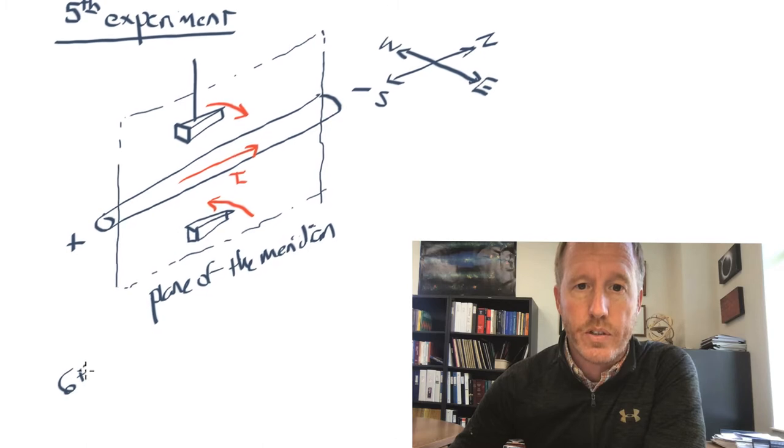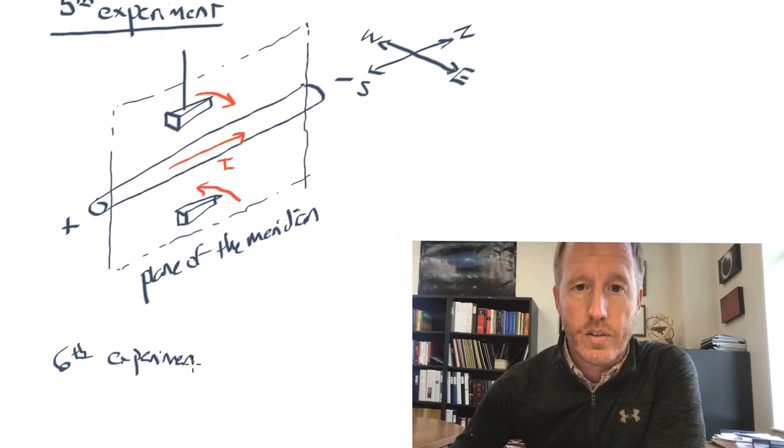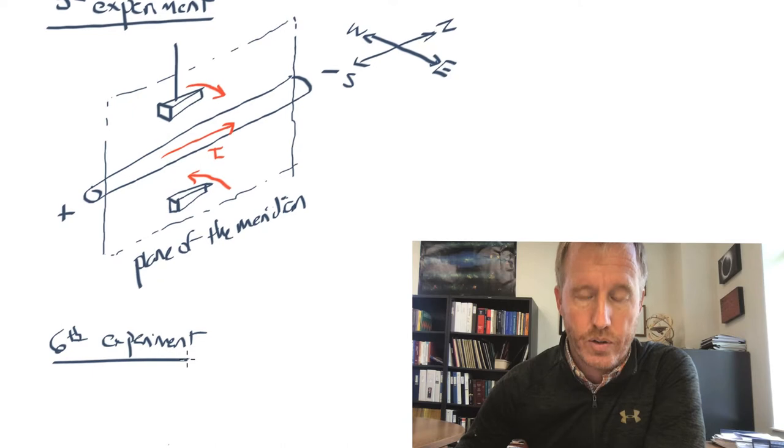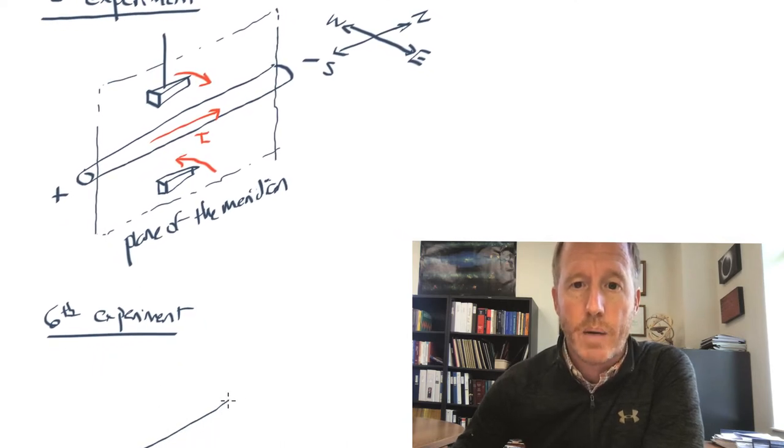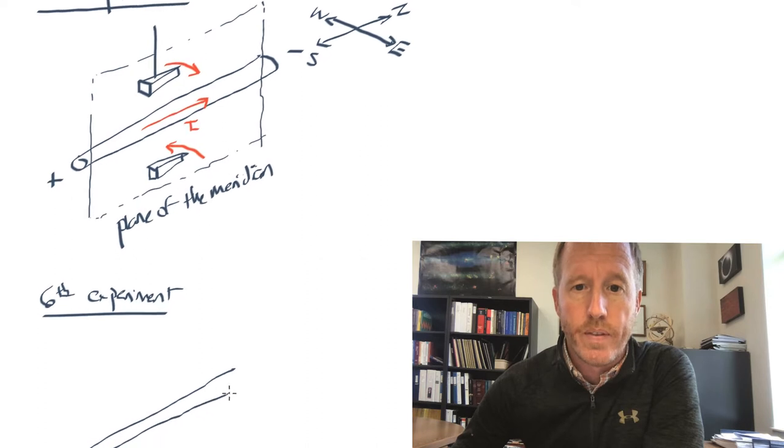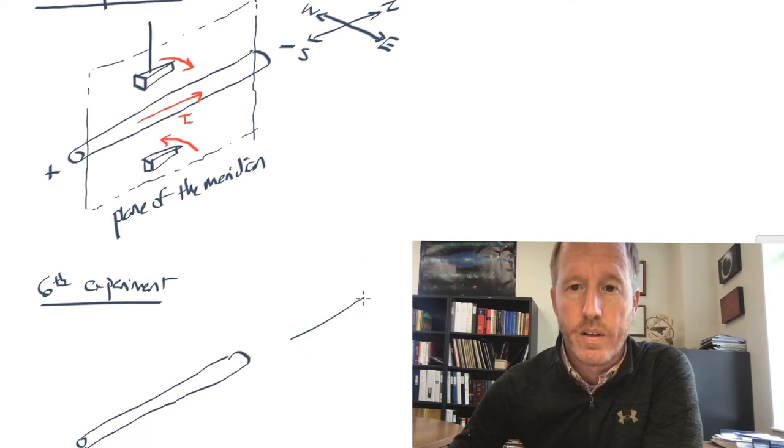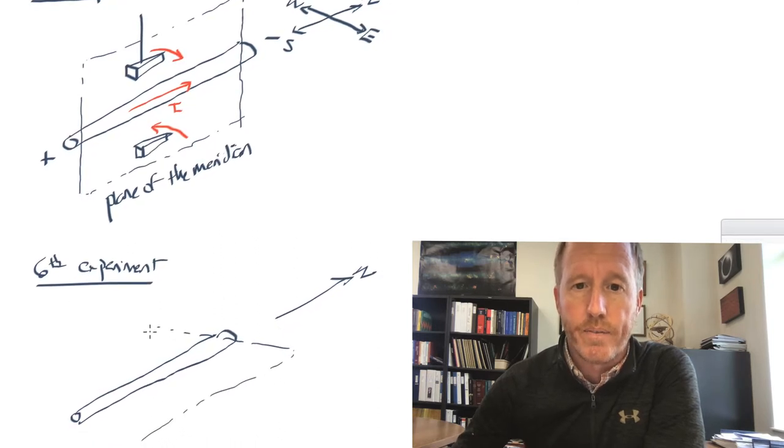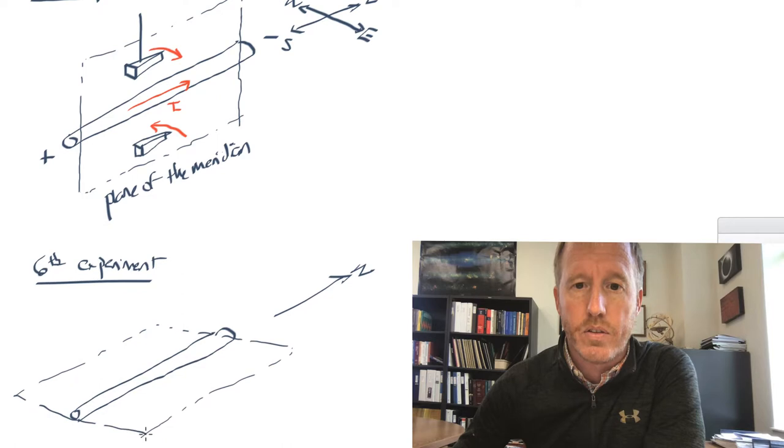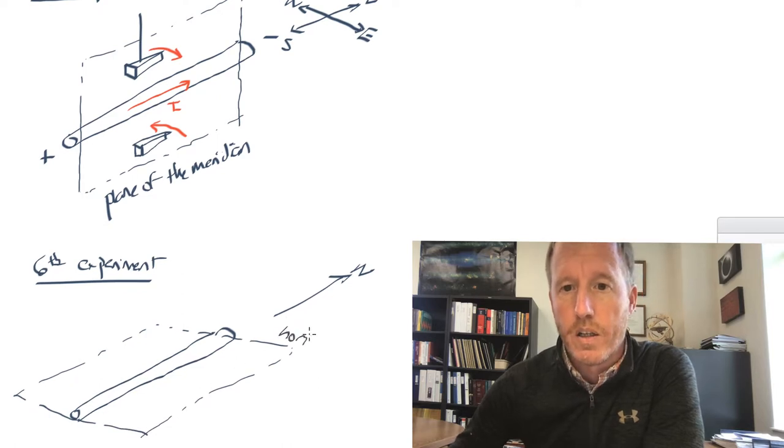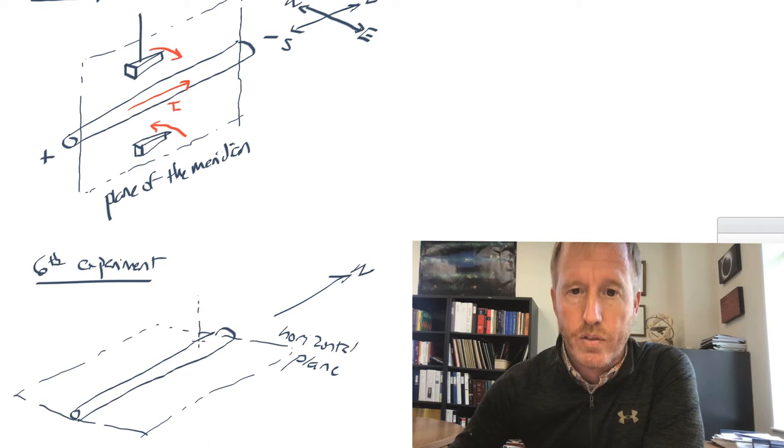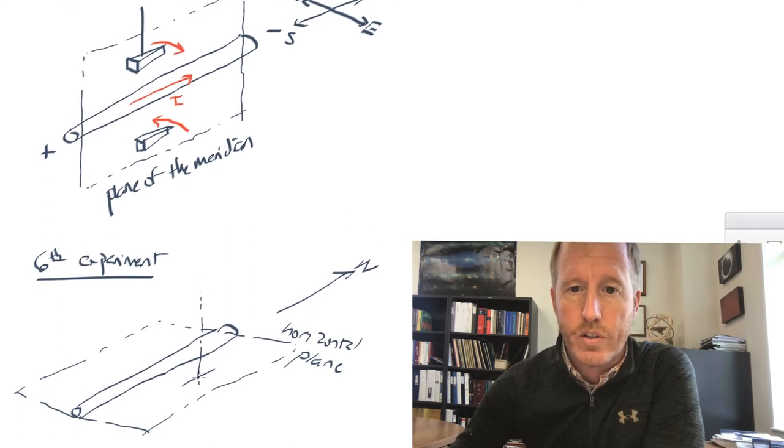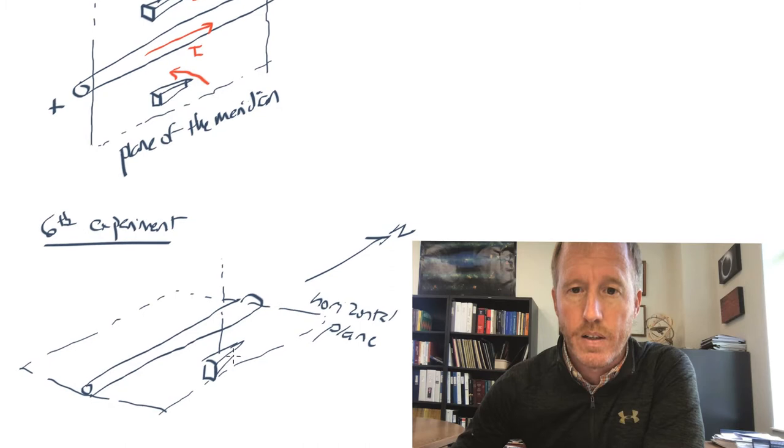So let's go on to his sixth experiment. In his sixth experiment, you might anticipate what he's going to do. He says, what if now, instead of placing the compass needle above or below the current carrying wire, what if we were to place it in the same horizontal plane as the wire? So I'm going to draw a plane like this. This would be the horizontal plane. And if you place this compass needle, if you kind of suspend it right next to this current carrying wire, like this.